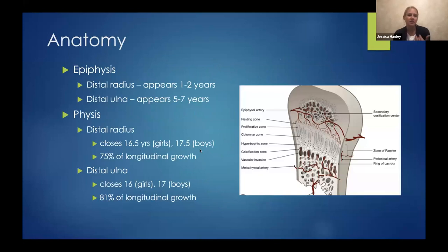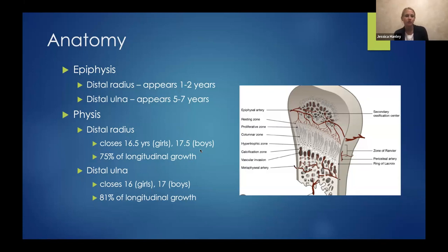The physis or growth plate of the distal radius — we always talk about premature closure, which we are very concerned about around the wrist. It generally closes around age 16. The distal ulna tends to close a bit sooner than the distal radius, and provides quite a bit of growth of that bone. That's why we're so focused on the distal growth plate, because it provides quite a bit of growth for the whole forearm.